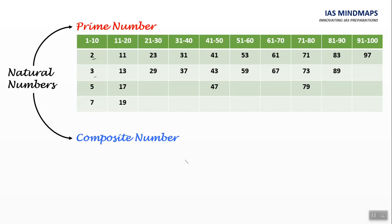However, all other numbers. That is, natural numbers minus prime numbers is composite number.